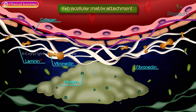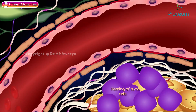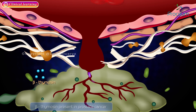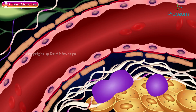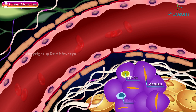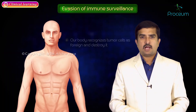Migration, vascular dissemination, and homing of tumor cells follows. Locomotion is aided by substances derived from tumor cells such as beta-thymosin, mainly present in prostate cancer, and insulin-like growth factors. Tumor emboli are more commonly formed with platelets and CD44-positive T cells, which bind with hyaluronate on high endothelial venules.